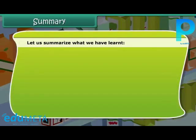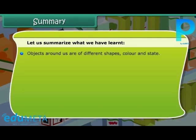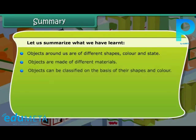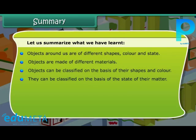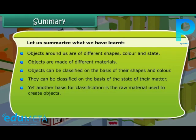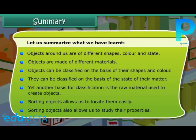Let us summarize what we have learned. Objects around us are of different shapes, colors, and states. Objects are made of different materials. Objects can be classified on the basis of their shapes and color, on the basis of the state of their matter, or on the basis of the raw material used to create them. Sorting objects allows us to locate them easily and also allows us to study their properties.